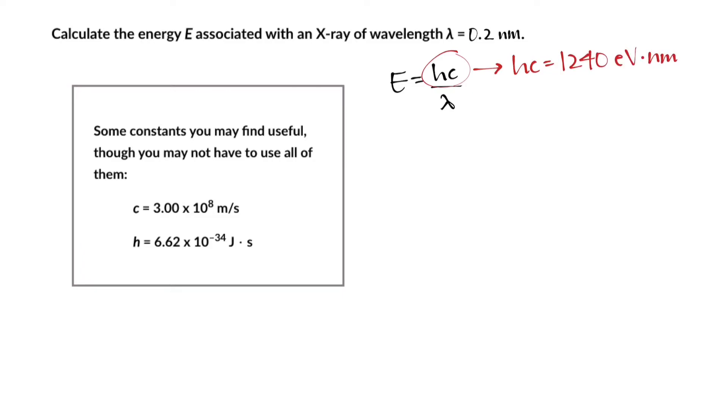This is going to prove very useful in this example because we don't have to multiply h with c. Really, those individual constants are irrelevant to us this time around because we already use them combined. That's how 1240 eV·nm was derived in the first place.